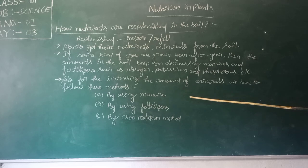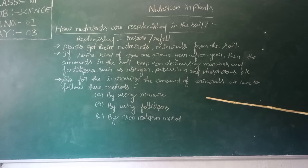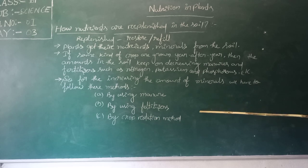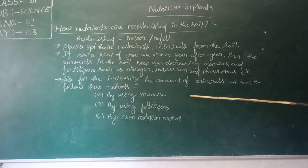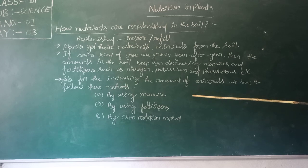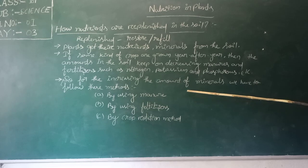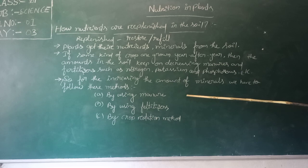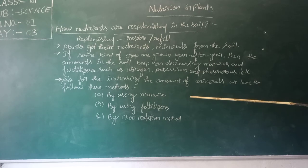Using manure means — manure includes human waste, excreta, and rotting materials, etc., which are added to the field. These contain minerals like nitrogen and phosphorus. Adding manure increases the fertility of the field, so we can grow the same crop year after year.